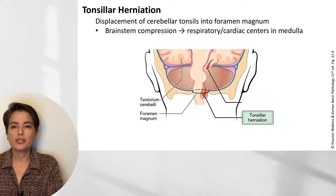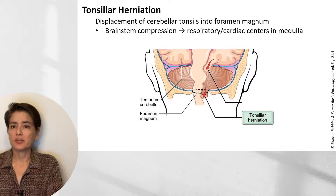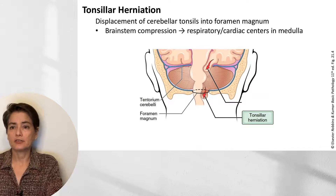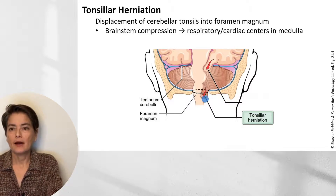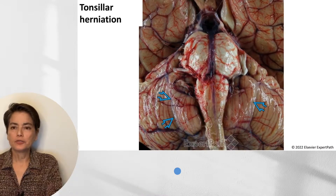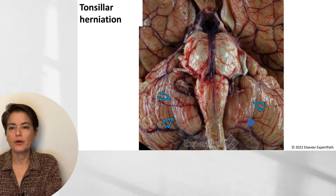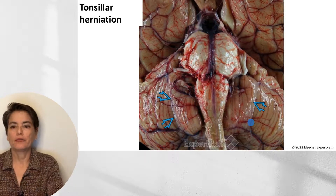The last type of herniation is tonsillar herniation, which is displacement of the cerebellar tonsils into the foramen magnum. This is life-threatening because brainstem compression can damage the respiratory and cardiac centers in the medulla. Here we can see the cerebellar tonsils being pushed through the foramen magnum, and on the gross specimen, you can see the characteristic groove in the cerebellum where these tonsils were forced through.